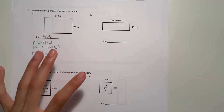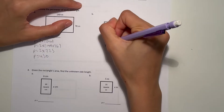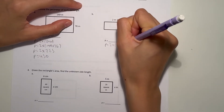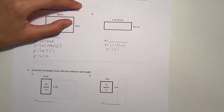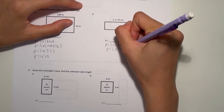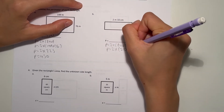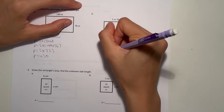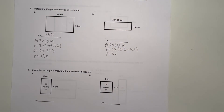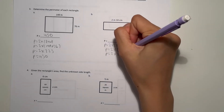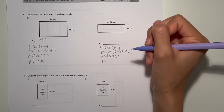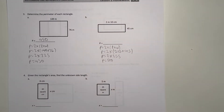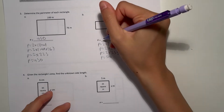And for B, perimeter equals 2 times length plus width. First, 2 meters 10 centimeters times 100 is 210 centimeters. That's 210 plus 45, which is 255. So perimeter equals 2 times 255. Our perimeter is 510 centimeters.